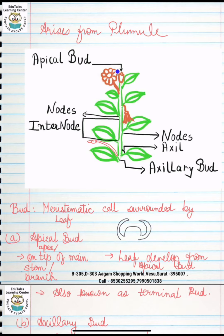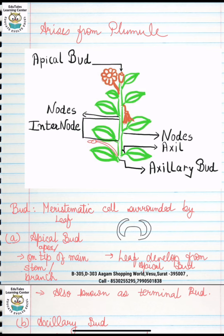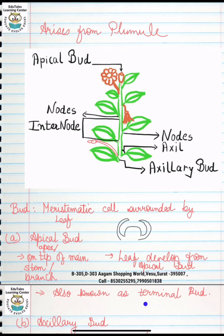The first type is apical bud. It is always at the tip or apex — we call it apical bud. If there is another branch here, we also call it apical bud. If it is a stem, it also has leaves, and the leaf develops from the apical bud. Lastly, we also call it terminal bud.